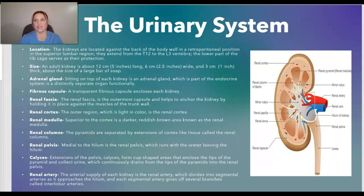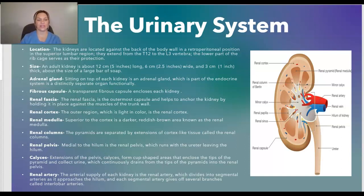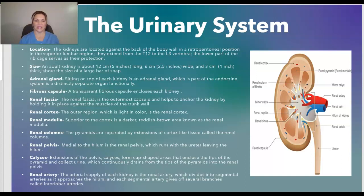The kidney is about the size of a large bar of soap. You have two adrenal glands — we talked about the adrenal glands in the endocrine system — sitting on top of each kidney on the right and left side. The adrenal gland is part of the endocrine system and is a totally separate and distinct organ functionally; it just happens to live on top of the kidneys. The fibrous capsule is a transparent capsule that encloses each kidney. The renal fascia is the outermost capsule of the kidney and helps to anchor the kidney by holding it in place against the muscles of the trunk wall.